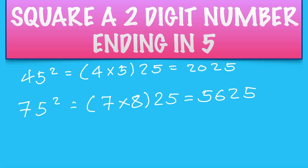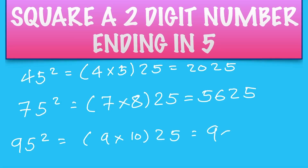One last example: 95 squared would be 9 times 10, then 25 on the end, which is 9025.